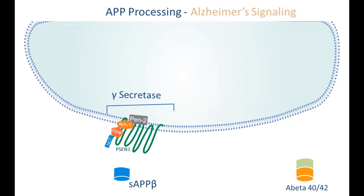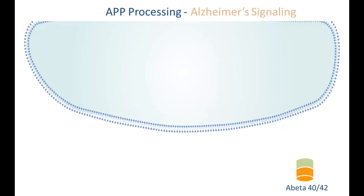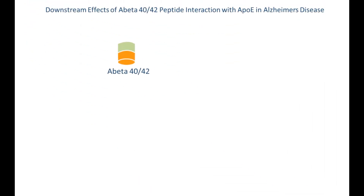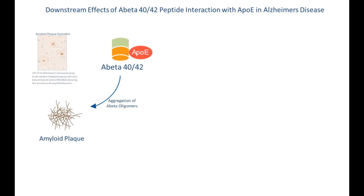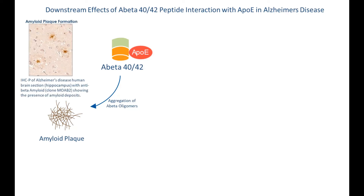The A beta 40-42 peptide, however, is involved in several downstream pathways related to Alzheimer's disease. A beta 40-42 initially interacts with APOE, which results in aggregation of A beta oligomers to generate amyloid plaque. Amyloid plaque can be detected via immunohistochemistry staining using A beta 42 specific antibodies, such as clone MOAB2.